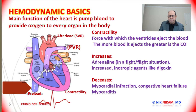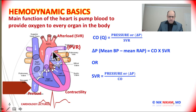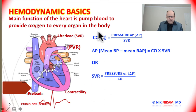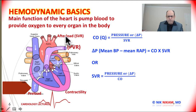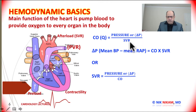The normal ejection fraction is 50 to 70%. Now let us look at some other hemodynamic parameters we use in assessing cardiovascular function. One such parameter is cardiac output, or simply Q, which is the flow — how much blood is flowing through the heart in one minute, expressed as liters per minute. Cardiac output is determined by the pressure change between the aorta and the right atrium divided by the systemic vascular resistance.